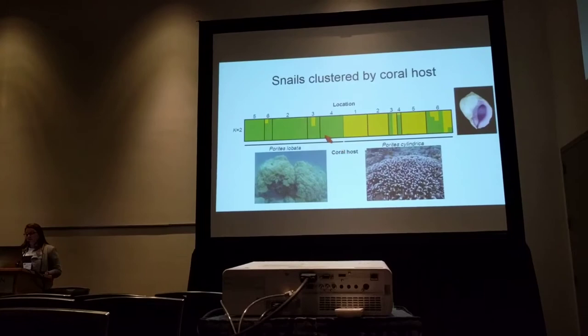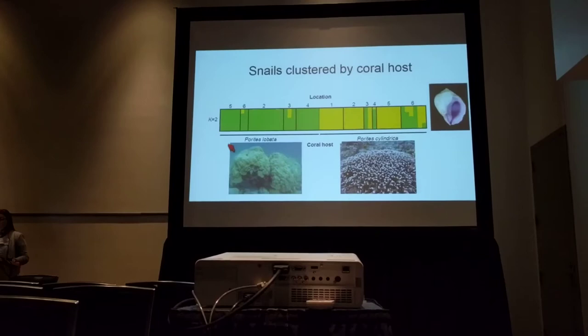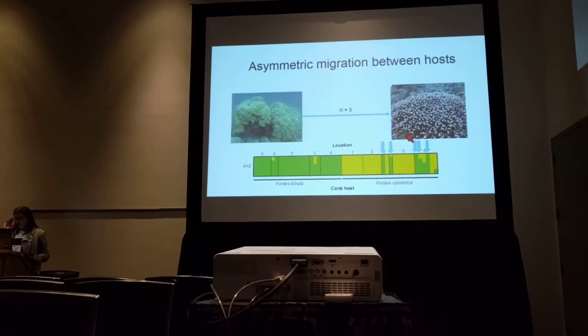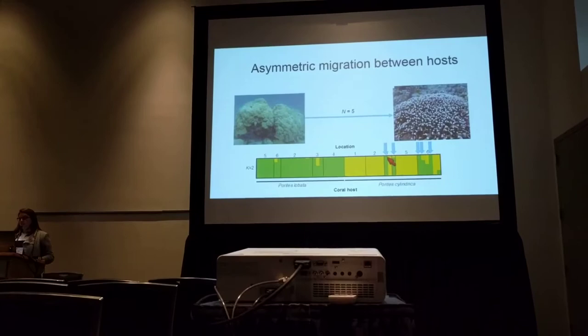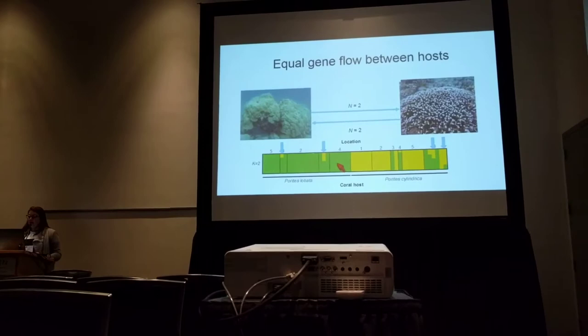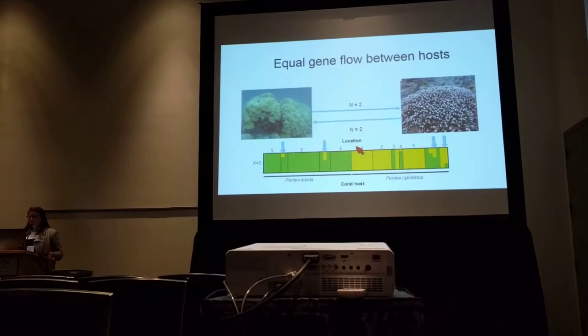We used the program STRUCTURE to examine population structure with these genome-wide SNPs. It indicated there were two distinct populations, and snails assigned to their coral host with 88% accuracy. Snails were genetically grouping by their host Parites lobata in green, and by their host Parites cylindrica in gold. Looking at migration, we saw instances of migration in an asymmetrical direction — moving from lobata to cylindrica. There were also four hybrids identified by STRUCTURE, indicating equal gene flow between the hosts.